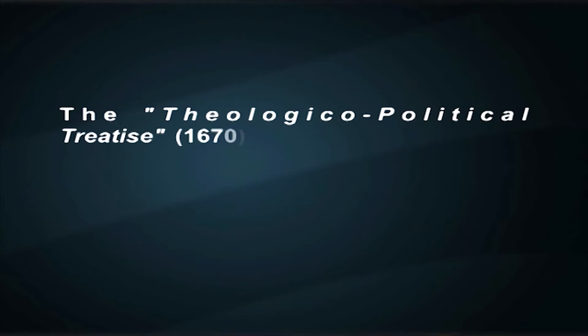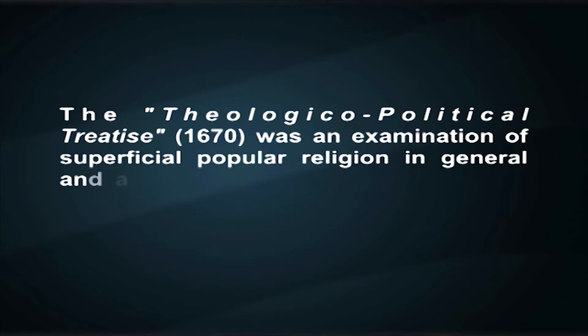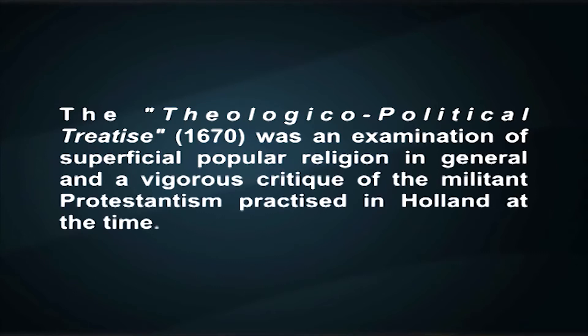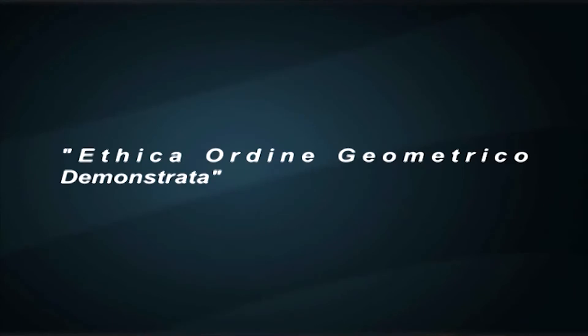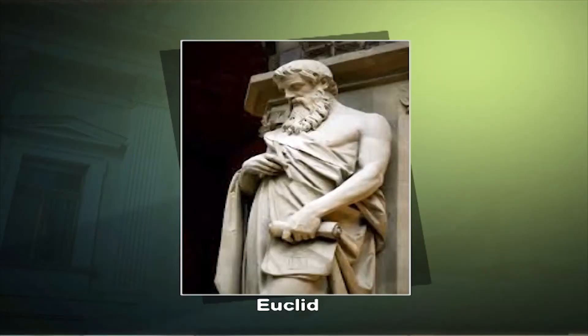The Theologico-Political Treatise in 1670 was an examination of superficial popular religion in general, and a vigorous critique of the militant Protestantism practiced in Holland at the time. He argued that Christians and Jews could live peaceably together if they would only rise above the petty theological and cultural controversies that divided them. The core of Spinoza's ethical views was encapsulated in his early treatise on the improvement of the understanding. But his major work was the monumental Ethica Ordine Geometrico Demonstrata, which is otherwise known as Ethics, an abstract and difficult work finished in 1676, but only published posthumously in 1677.